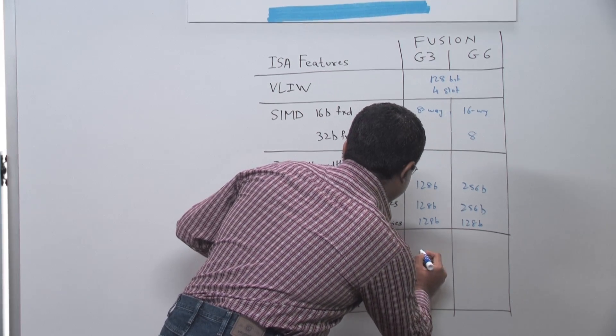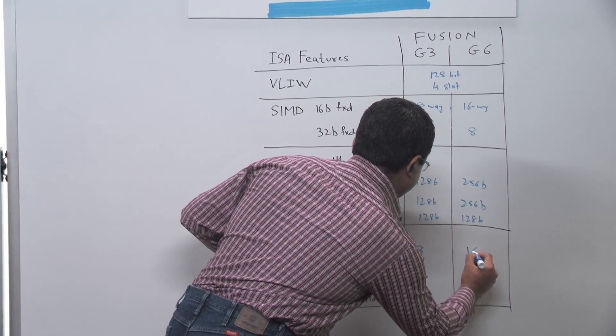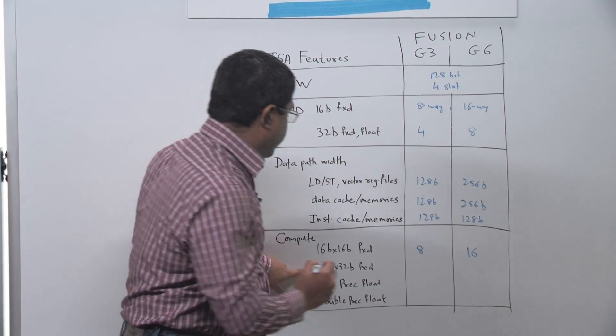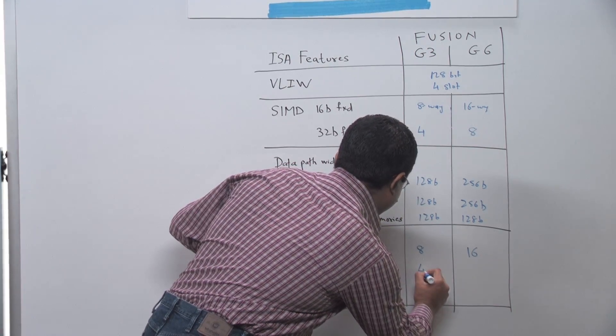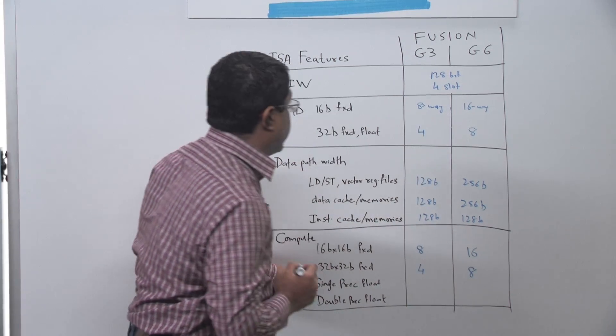the Fusion G3 can do 8 multiplies per cycle and the Fusion G6 can do 16. For 32-bit fixed point multiplies, 4 per cycle for Fusion G3 and 8 per cycle for Fusion G6.